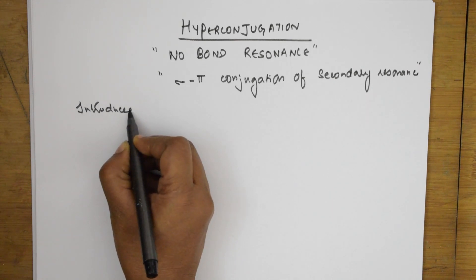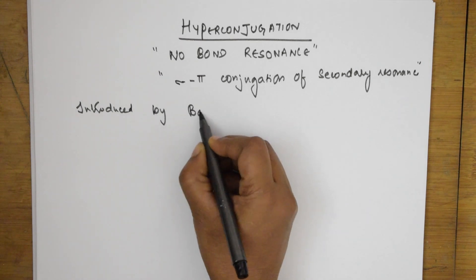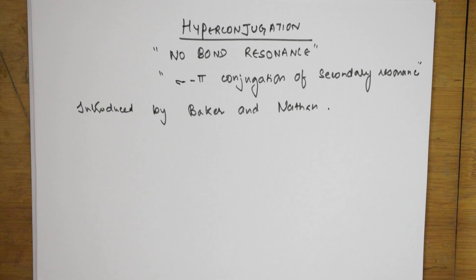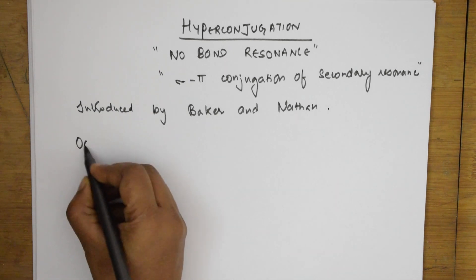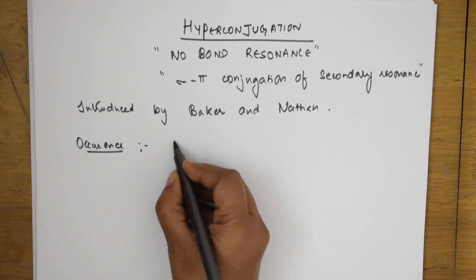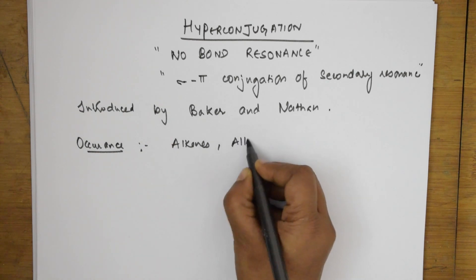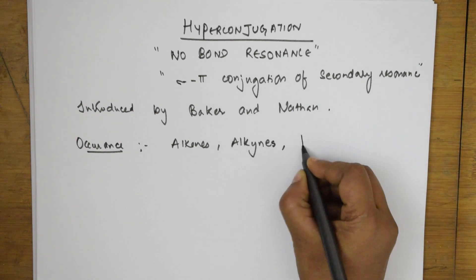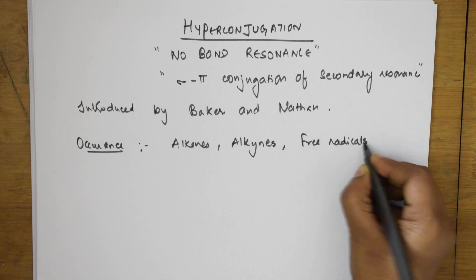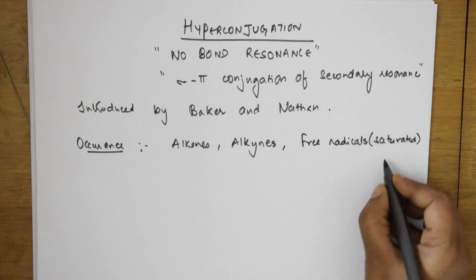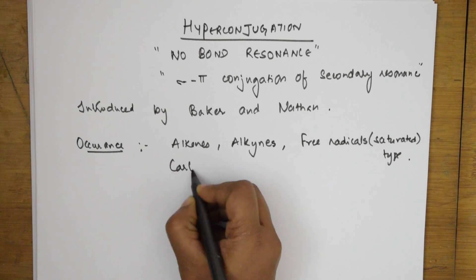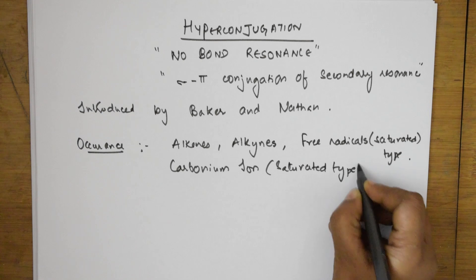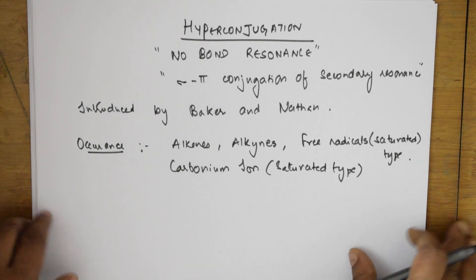Hyperconjugation was introduced by Baker and Nathan. Now, where do we observe hyperconjugation? It is observed in alkenes. It can also be studied in free radicals — but they should be of saturated type — and in carbonium ions, which should also be of saturated type.